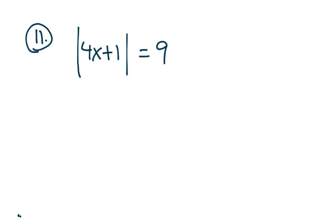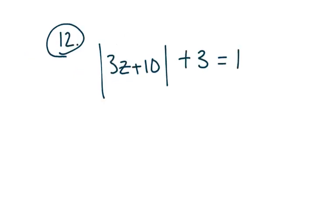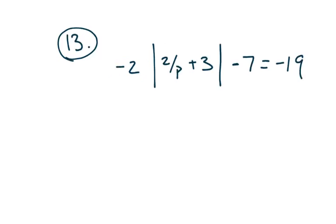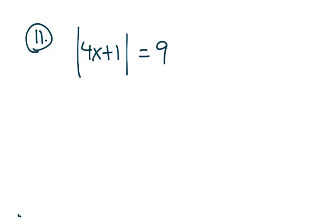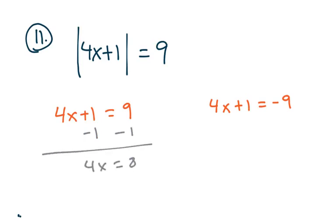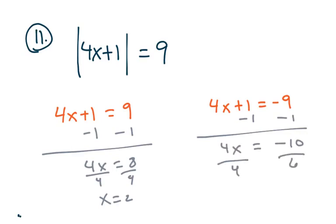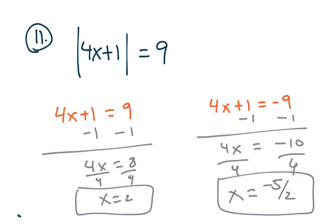This next one you can definitely do on your own — pause the video and give it a shot. Let's do 11 and 12 together. We break it into two cases: 4x plus 1 equals 9, and 4x plus 1 equals negative 9. Solving each: subtract 1, then divide by 4. We get x equals 2 and x equals negative 5 over 2. For number 12, we subtract 3 and get the absolute value equal to a negative number, which means no solution.